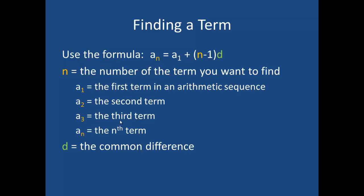Another common problem is to find a given term. We use the formula a sub n equals a sub 1 plus the quantity n minus 1 times d. In this formula, n represents the number of the term you want to find — not the value, but which term in the sequence. We use subscripts to denote the terms: a sub 1 is the first term, a sub 2 the second, a sub 3 the third, a sub 10 the tenth, and a sub n represents the nth term. d is the common difference.